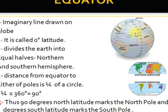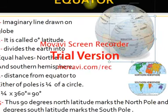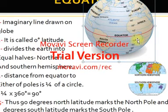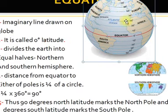The Equator is the zero degree latitude. The parallel latitudes run across the top and bottom of the globe.